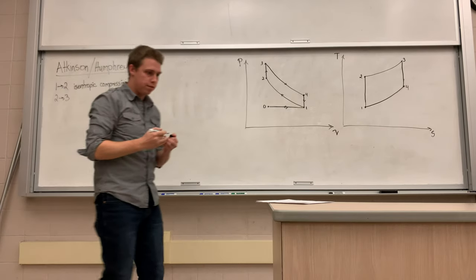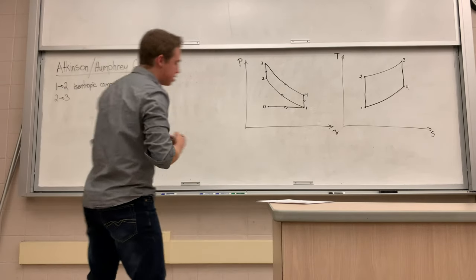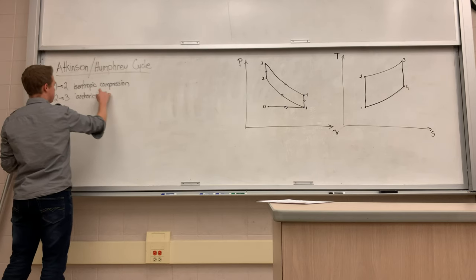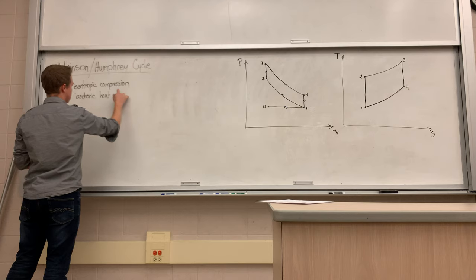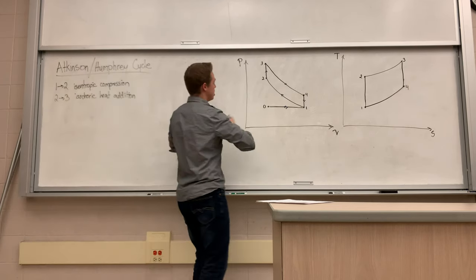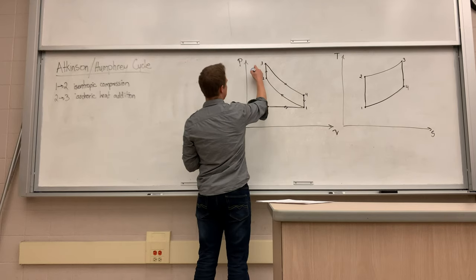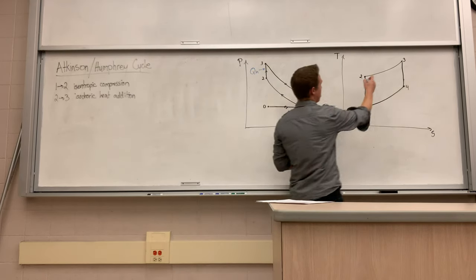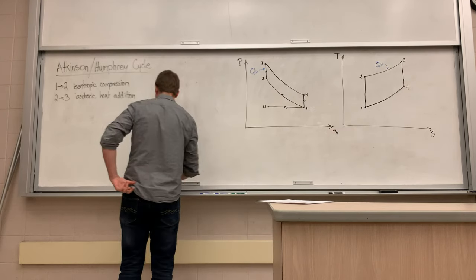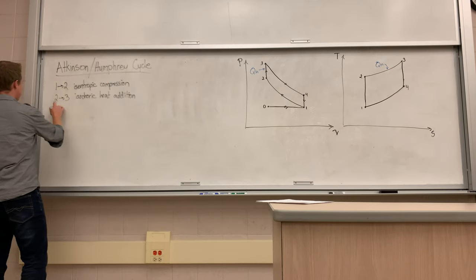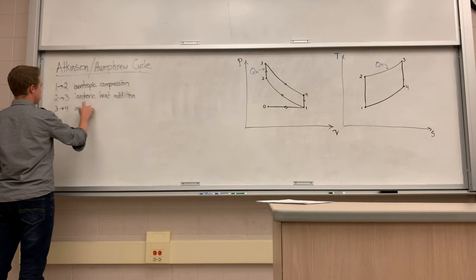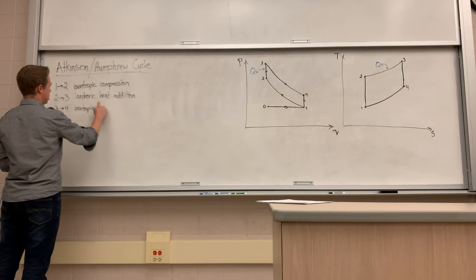Going from two to three is isochoric heat addition — I'll label this on the diagram as Q-in from two to three. Then from three to four we have isentropic expansion.